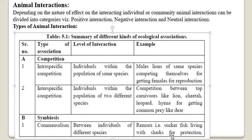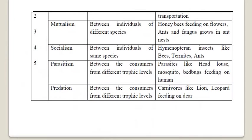This commensalism is an association where one individual is at benefit. Mutualism is between individuals of different species and both individuals are benefited. Commensalism is a kind of association in which only one individual is benefited and the other is neither benefited nor at harm.